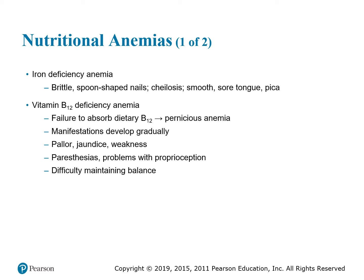Nutritional anemias start on page 72. With iron deficiency anemia, you have brittle spoon-shaped nails, cheilosis — dry, cracked places on the mouth — a smooth sore tongue, and cravings for non-food items such as in pica. Vitamin B12 is not absorbed through the gut properly in pernicious anemia. It develops over time. You may have pallor, jaundice, weakness, paresthesia, dizziness, lightheadedness, difficulty maintaining balance, and a beefy red, sore tongue.